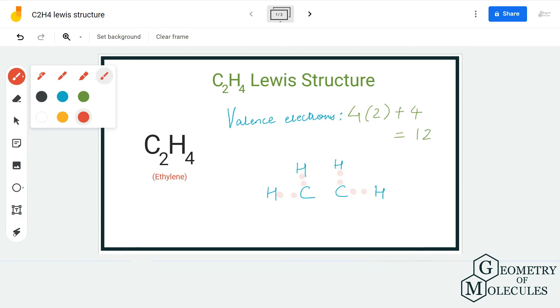We are also going to place a pair of electrons between these two carbon atoms, which means we have used up 10 out of 12 valence electrons and we are just left with one pair of valence electrons.